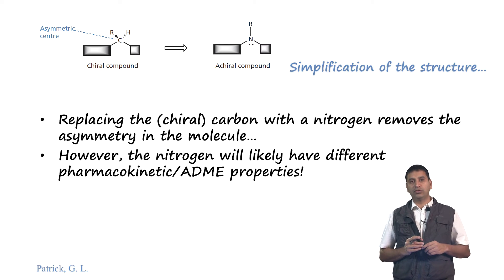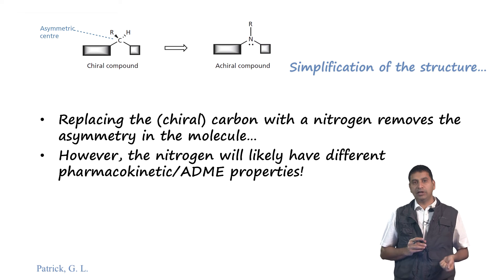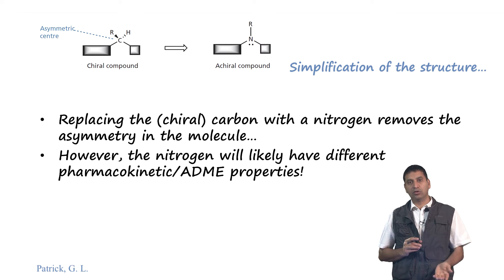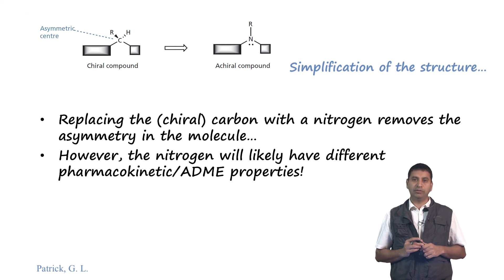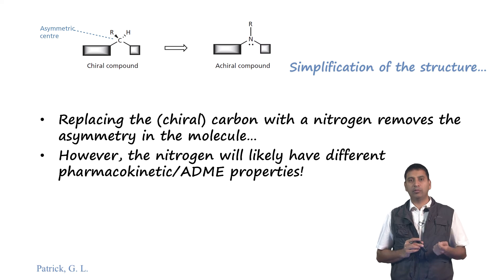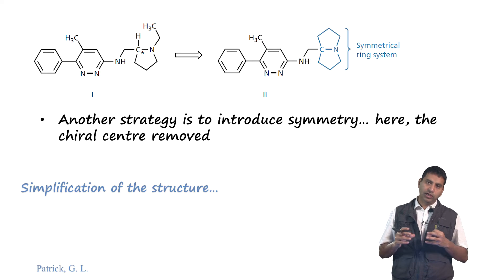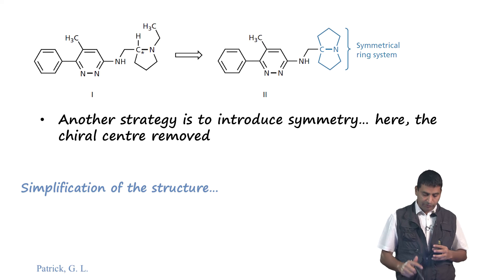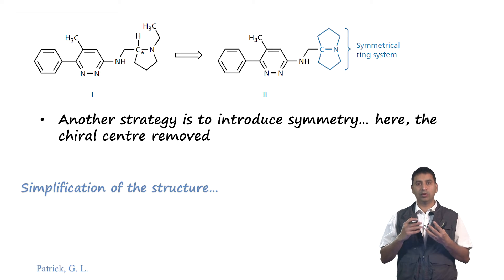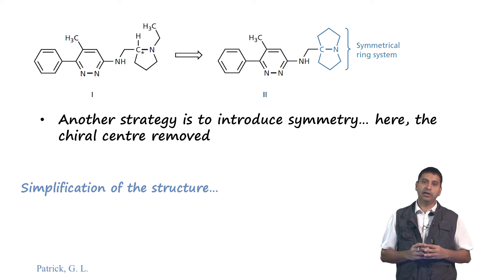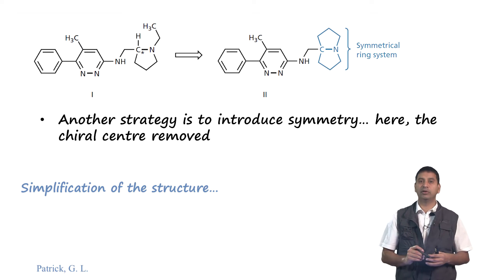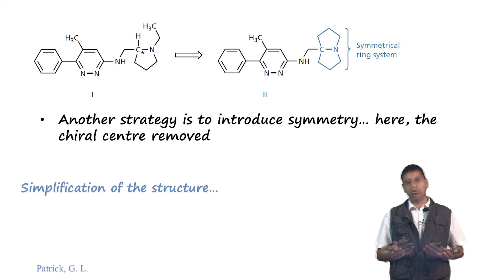Another approach is to remove the chiral centre altogether by replacing the carbon with nitrogen. Nitrogen undergoes ring flipping and therefore the molecule becomes achiral. This may be an important way to remove asymmetry or introduce symmetry. However, nitrogen has very different pharmacokinetics and ADME properties, so one has to be careful with this modification. Another strategy is to introduce symmetry: if a molecule has an asymmetric centre, we could convert it to a molecule with a plane of symmetry, making it achiral. For example, introducing two five-membered rings that are mirror images creates a plane of symmetry, making the molecule overall achiral.